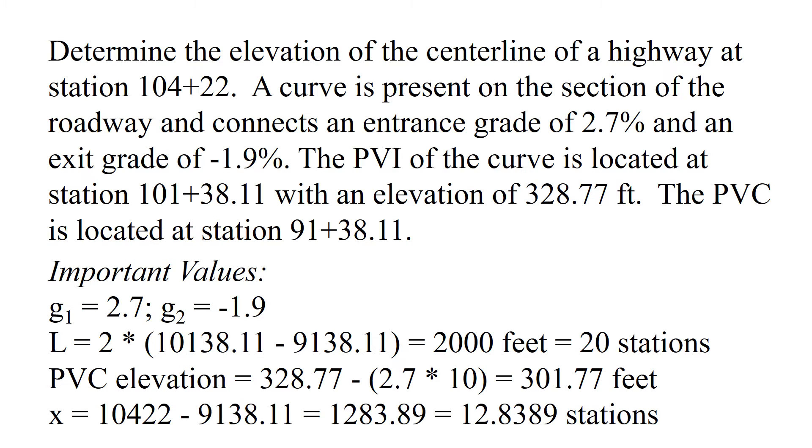2.7, which is the grade, times the length, which is 10 stations. This gives us a PVC elevation of 301.77 feet.